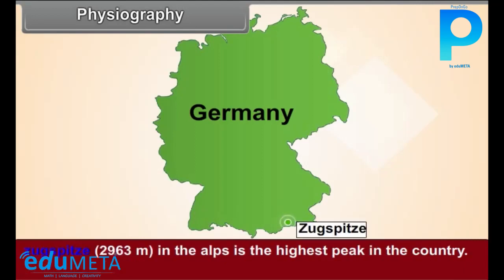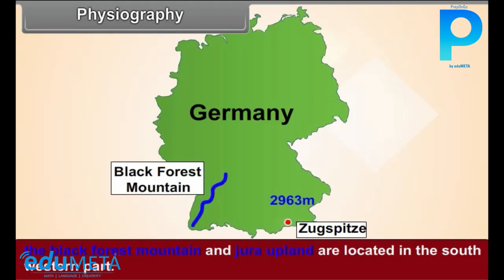Zugspitze, at 2,963 meters, in the Alps is the highest peak in the country. The Black Forest Mountain and Jura Upland are located in the southwestern part.